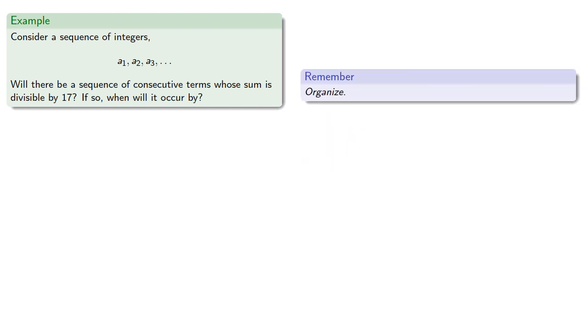So in general, organize. There could be many possible sums of consecutive integers, like a1, or a1 + a2, or a2 + a3. So how can we organize them?